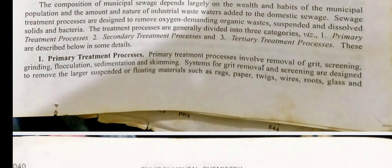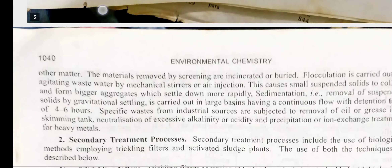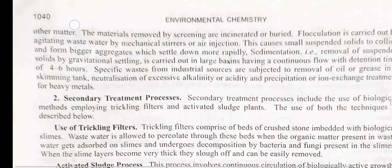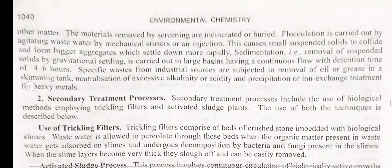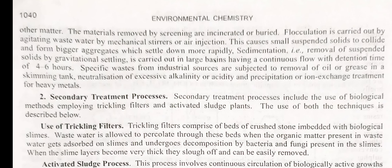Systems for grit removal and screening are designed to remove the largest suspended or floating material such as rags, paper, twigs, wires, roots, glass and other matter. The material removed by screening is incinerated or buried. Flocculation is carried out by agitating waste water by mechanical stirrer or air injection, causing small suspended solids to collide and form bigger aggregates which settle down more rapidly. Sedimentation — removal of suspended solids by gravitational settling — is carried out in large basins with continuous flow with a detention time of about 4 hours.